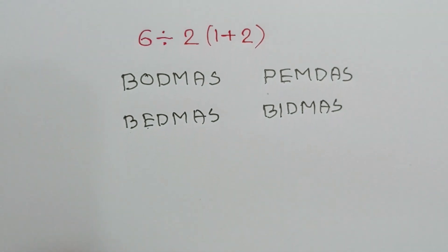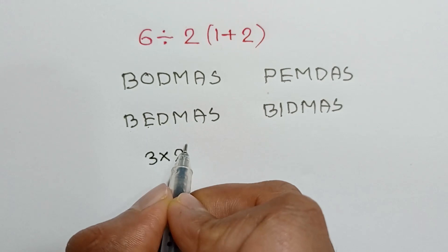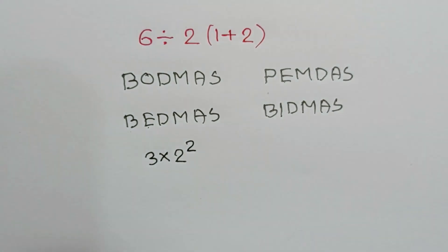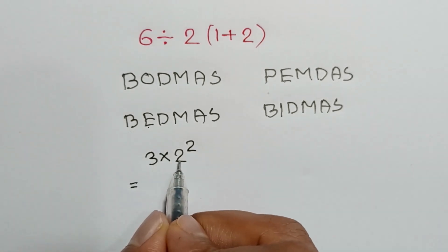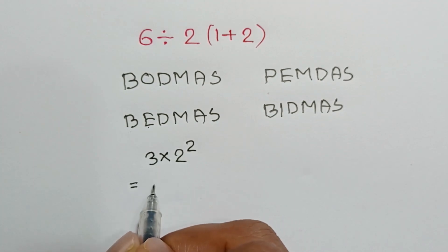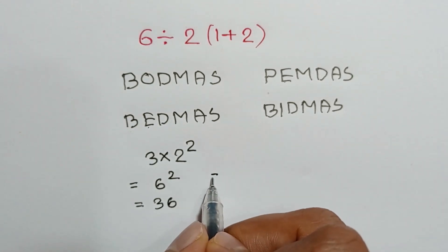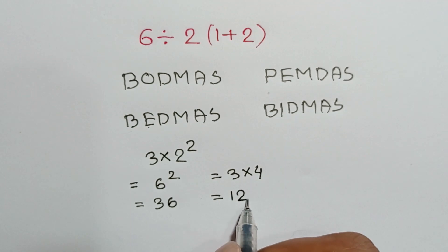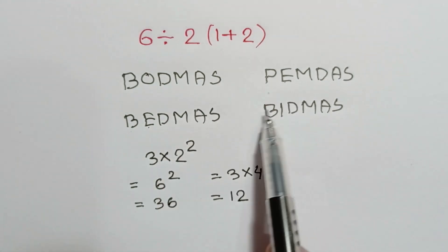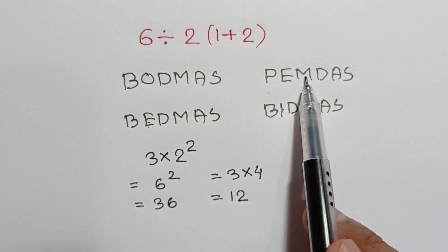To understand this, look at this problem: 3 times 2 squared. What is the value of this expression? If we calculate this part first, we will get 3 times 2 is equal to 6, squared is equal to 36. Or if we calculate the exponent first, we will have 2 squared is equal to 4, then 3 times 4 is equal to 12. But according to these rules, exponents or indices will work before multiplication.